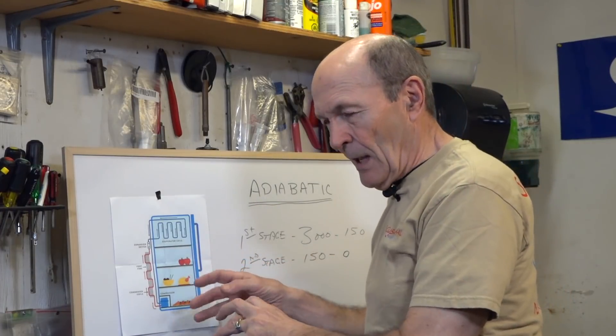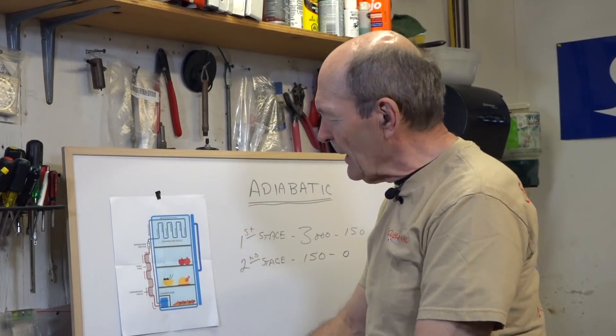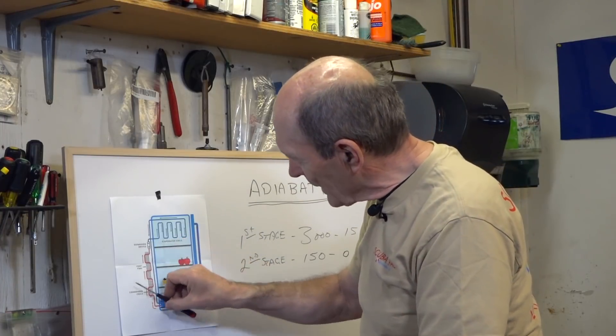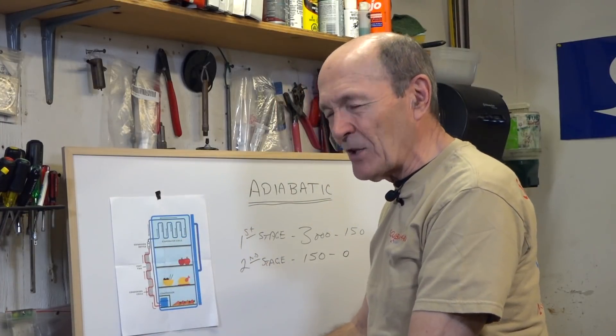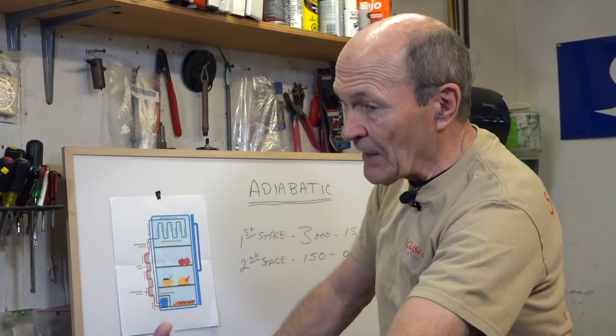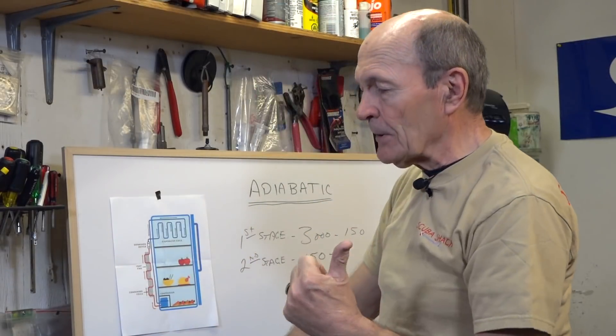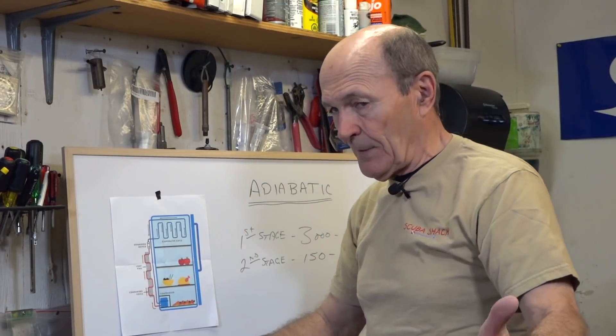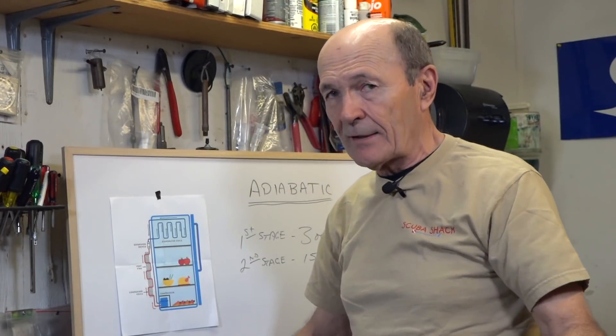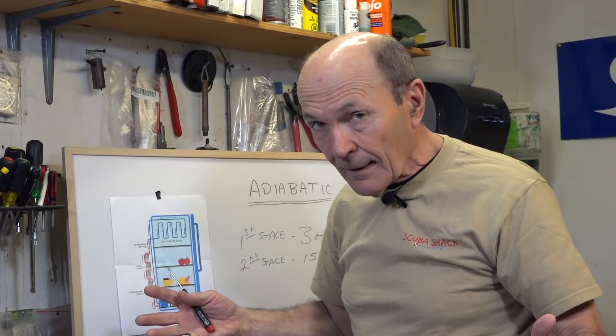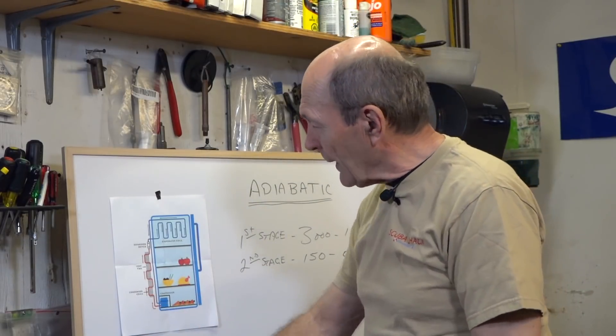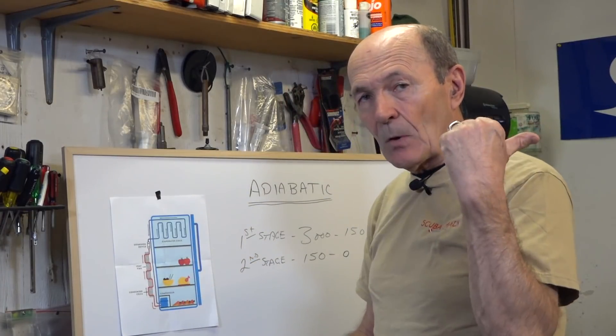Now, the only difference between this system and your regulator system is that all this part here, this bottom part, the compressor and the red hot gas, is in the dive store, right? They fill your tank in the dive store. And you know when you fill your tank, it gets hot. We've talked about this in Tech Tips as well. It gets hot, right? So that's that whole part. Now all this red part from there down is in the dive store.